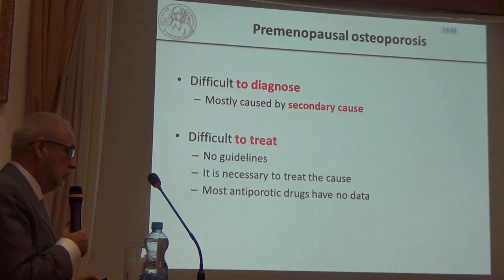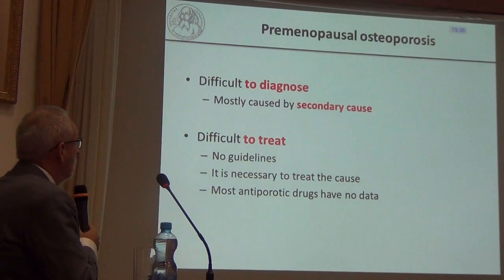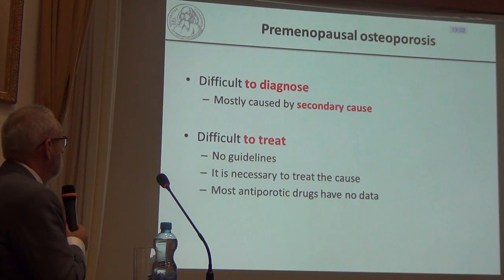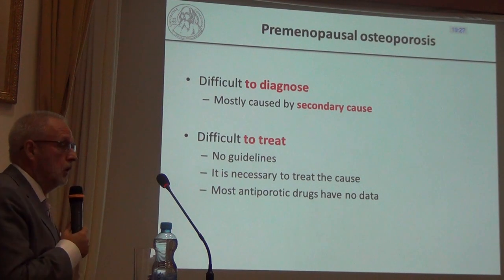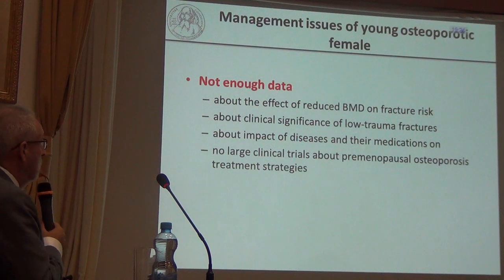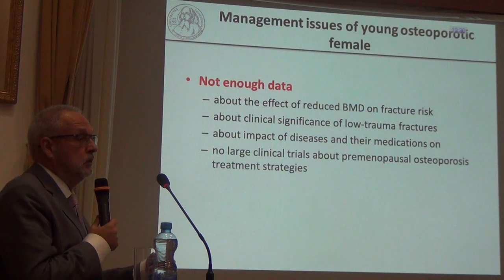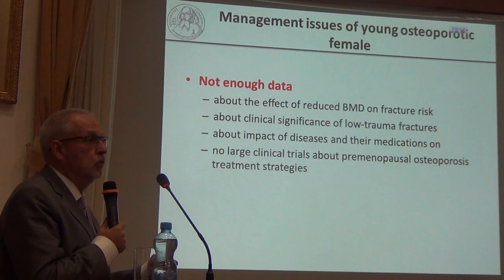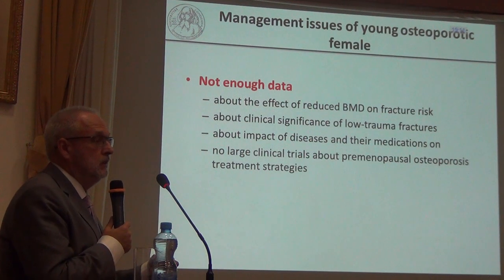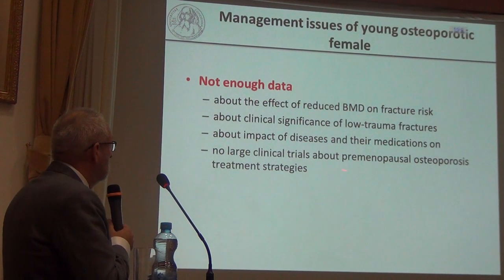Premenopausal osteoporosis or low bone mass is very difficult to diagnose — it is mostly caused by secondary causes — and even more difficult to treat. We do not have enough data about the effect of reduced hormonal density on actual fracture risk in this group, about the clinical significance of low-trauma fractures, about the impact of disease and medication, and there are no large clinical trials about treatment strategies.